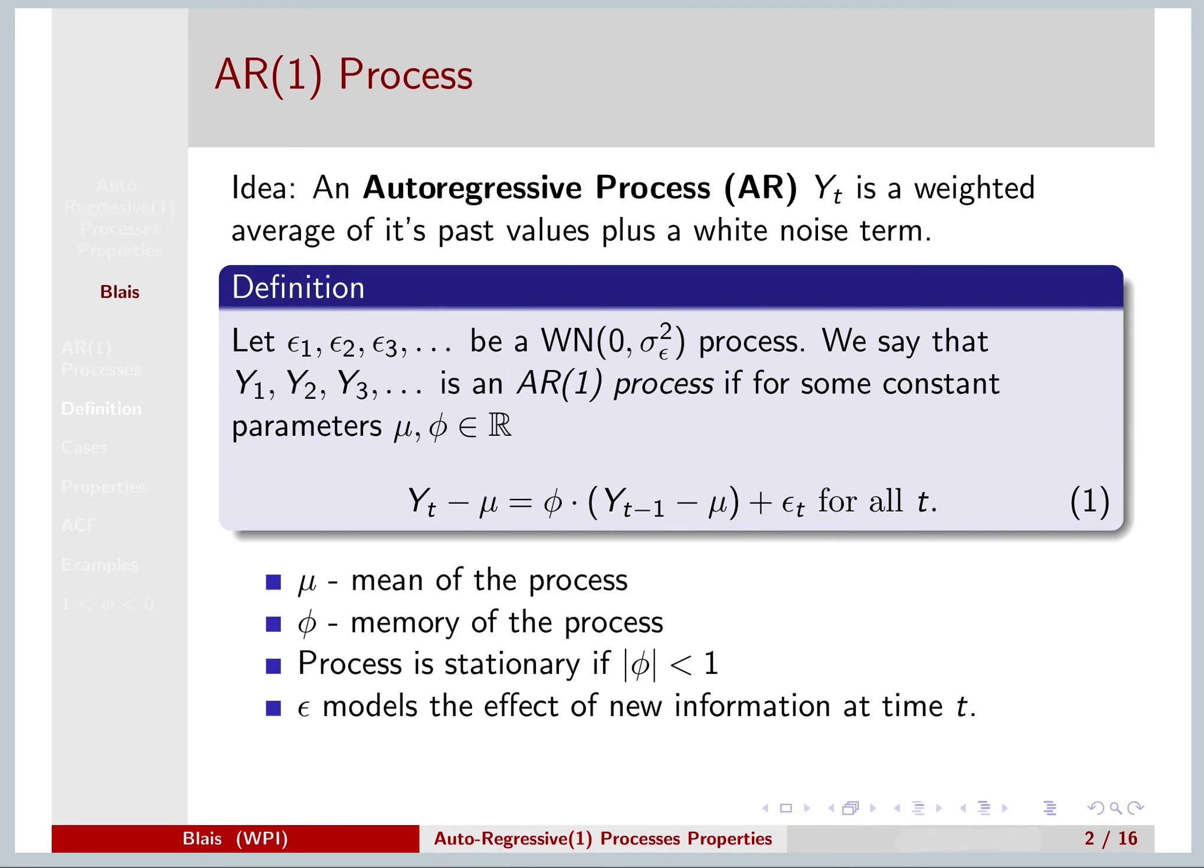So first, let's recap. The idea of an autoregressive process Y_t is that it's a weighted average of its past values plus a white noise term.